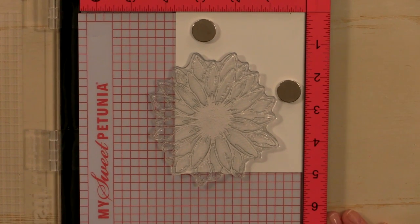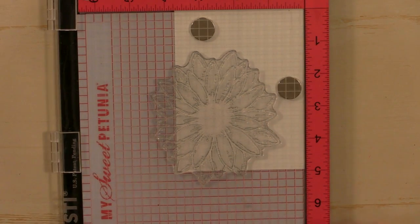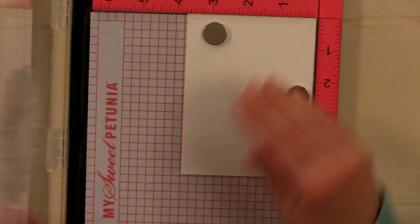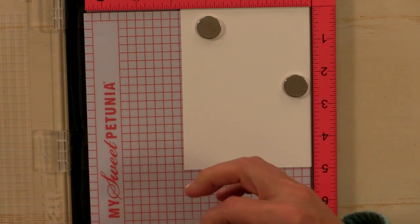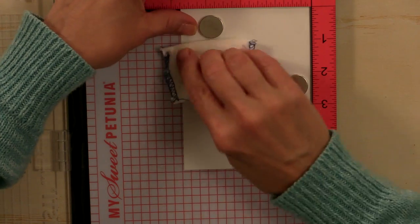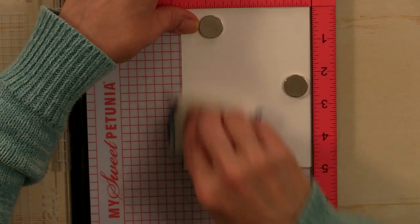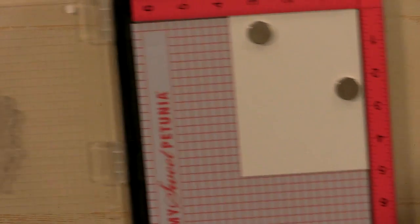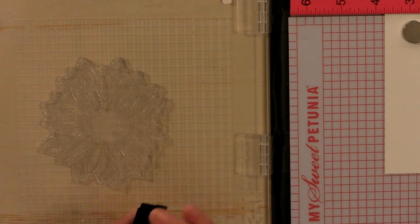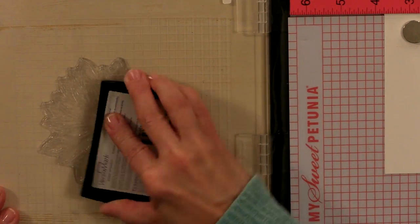Now I'm going to pick that up with my MISTI lid. And then I'm going to use my embossing magic pad and just rub some of that on my piece of card stock. Then using a Versamark pad, I'm going to ink that big stamp up.